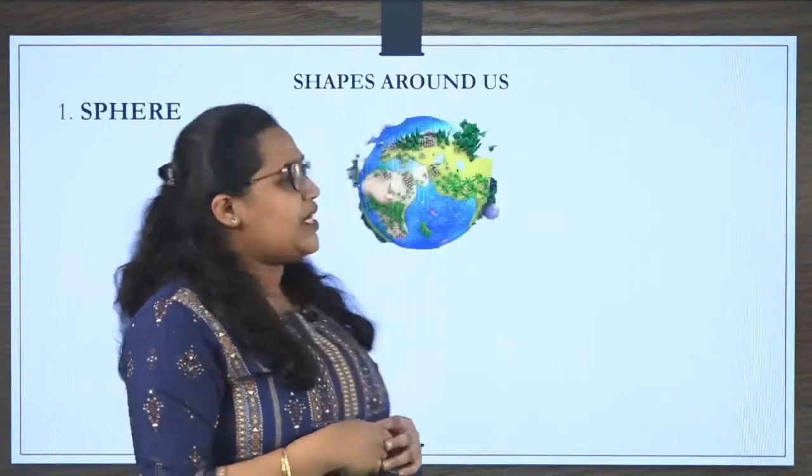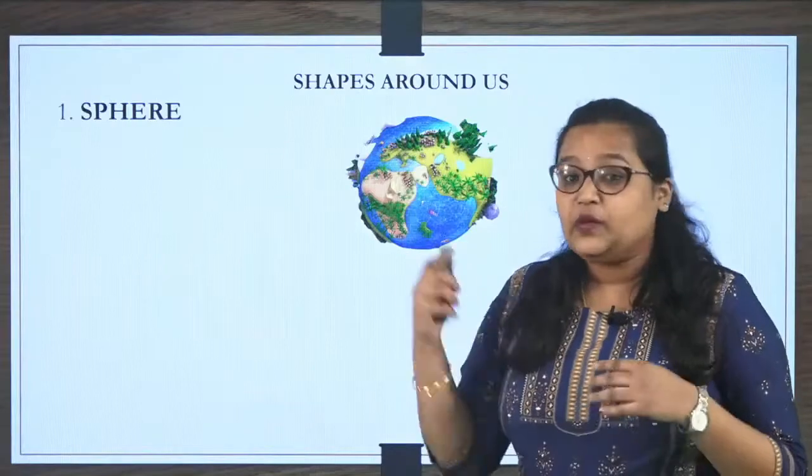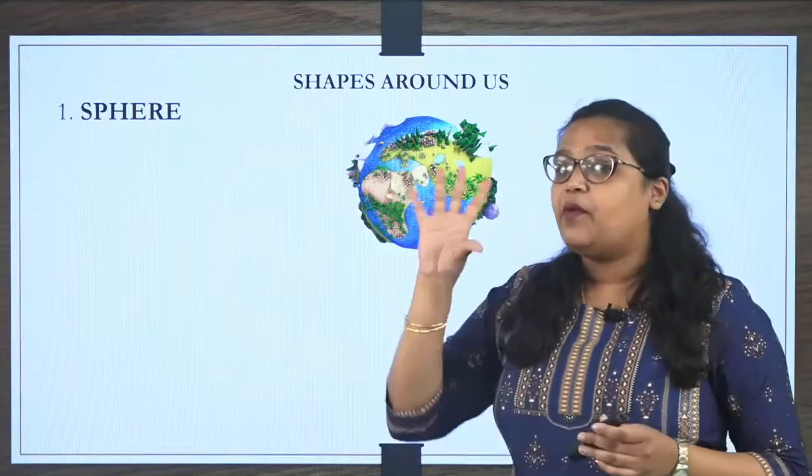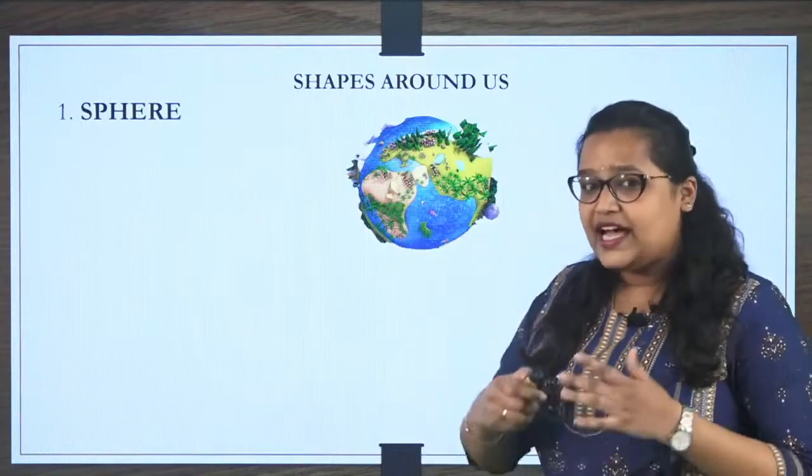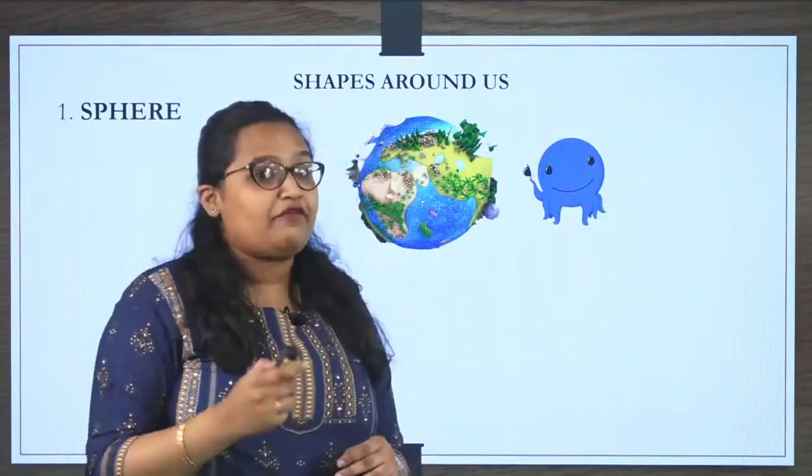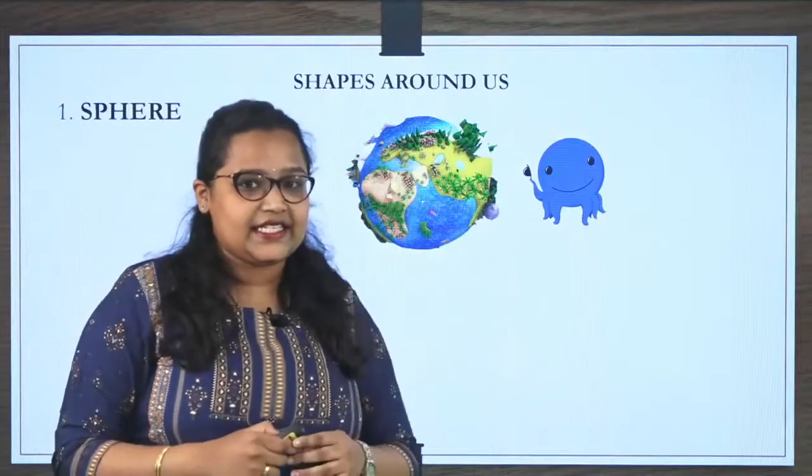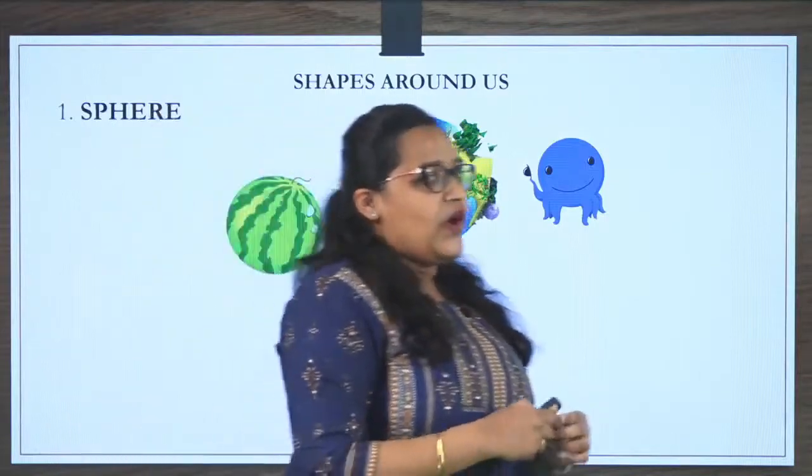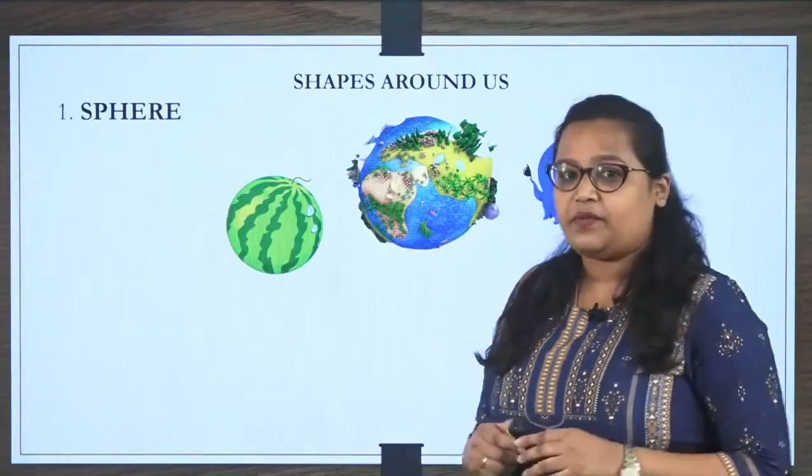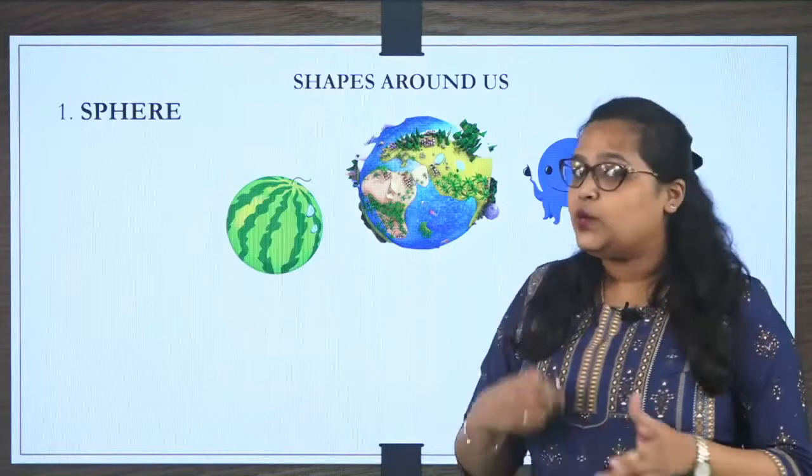So here, first I have showed you one shape and this is our globe. In which shape it is? It is in sphere shape. Sphere shape means a ball kind of shape. So examples for this shape here is, Meet our friend Oswald. You have met him already, right? He is also in the round shape with eight legs. So next, what is this? This is a watermelon which is in a round shape. And we have so many things around us which is in the round shape. We'll see some more examples.